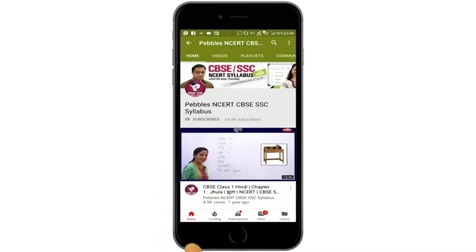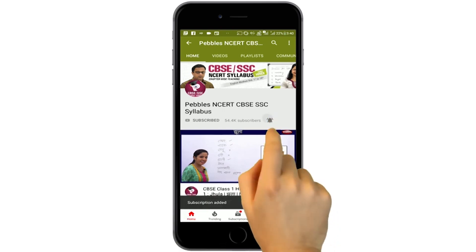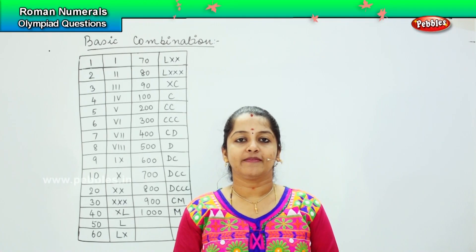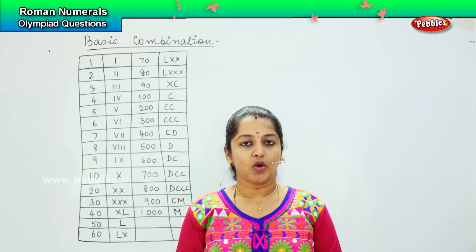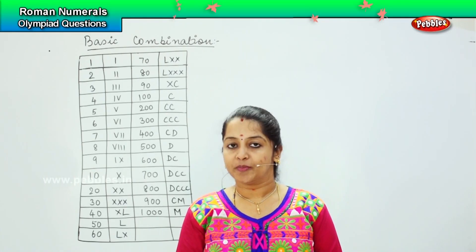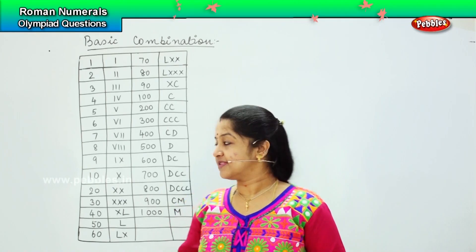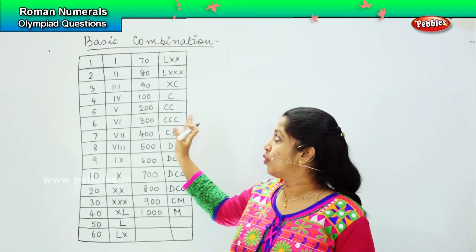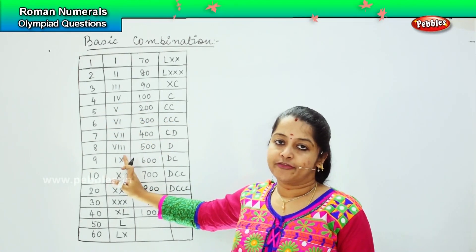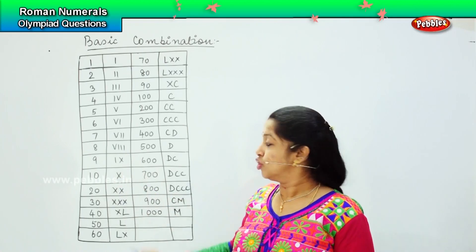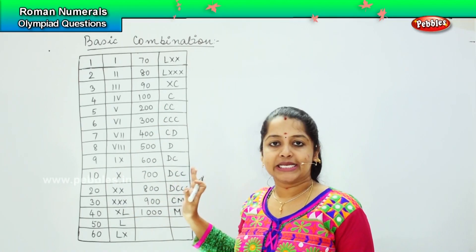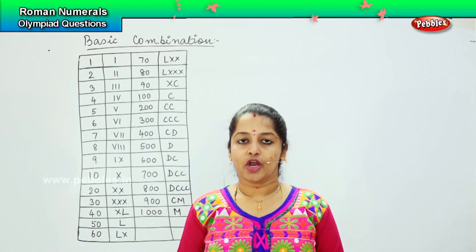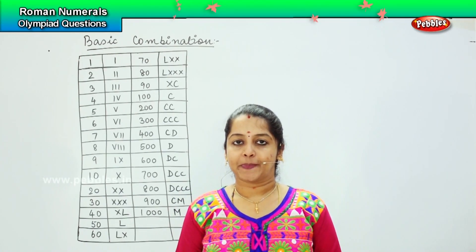Please subscribe to our channel and for latest updates click on the bell icon. Okay children, so now we are going to solve some sums based on whatever we have learned so far. To make your work simpler, I have put here a tabulated column where you have the number value as well as the value in Roman numerals, so you can use this table as a hint to complete your sums. Are you all ready?